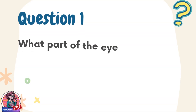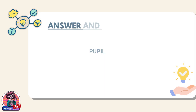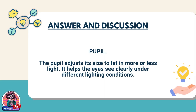Question 1. What part of the eye controls the amount of light entering it? Answer: Pupil. The pupil adjusts its size to let in more or less light. It helps the eyes see clearly under different lighting conditions.